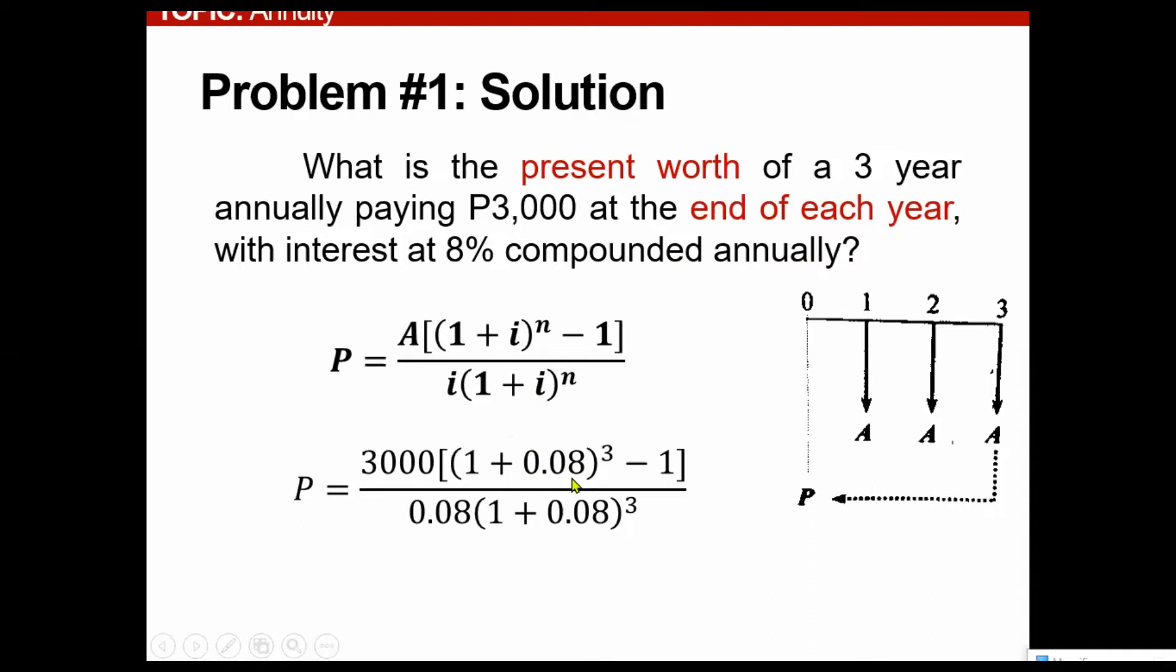So no need to change or divide this N or multiply something and then divide I with something. So just substitute 8% or equivalent to 0.08 raised to 3, number of periods. Minus 1 and so on. So the present worth is $7,731.29.